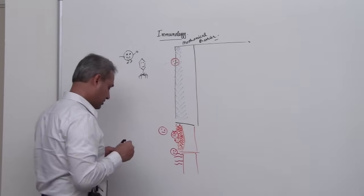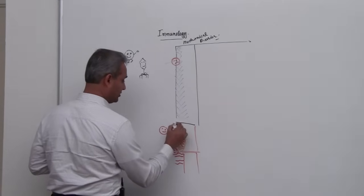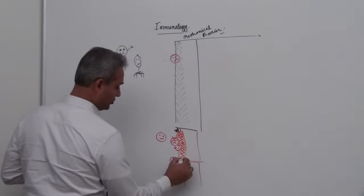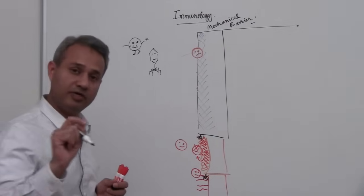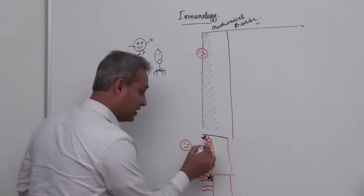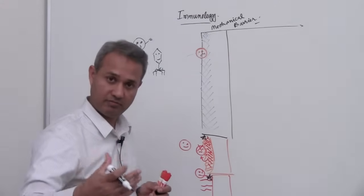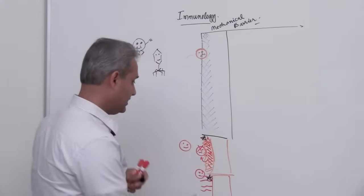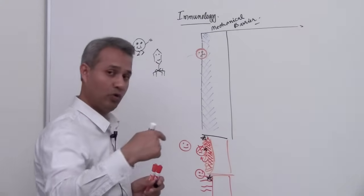Then we also have proteins called defensins. We also have proteins called defensins. These proteins, what they do is they can pick up, they can identify a foreign pathogen, a foreign invader, they can identify that and they can create holes in the membrane.